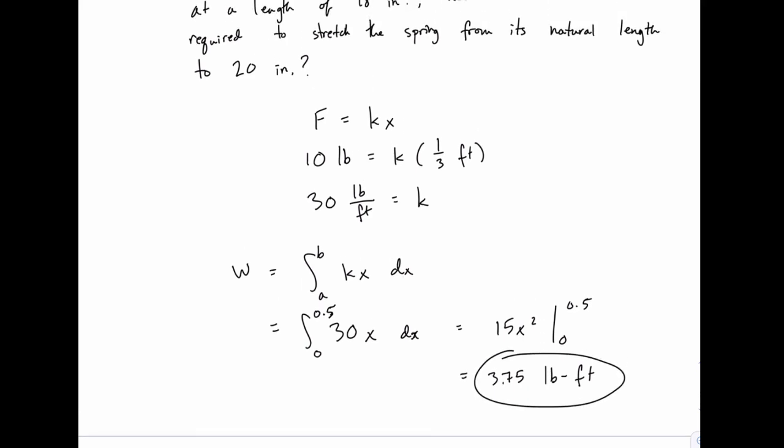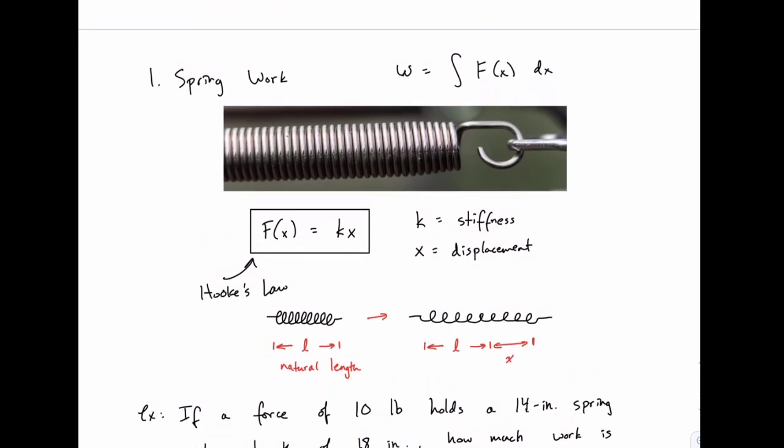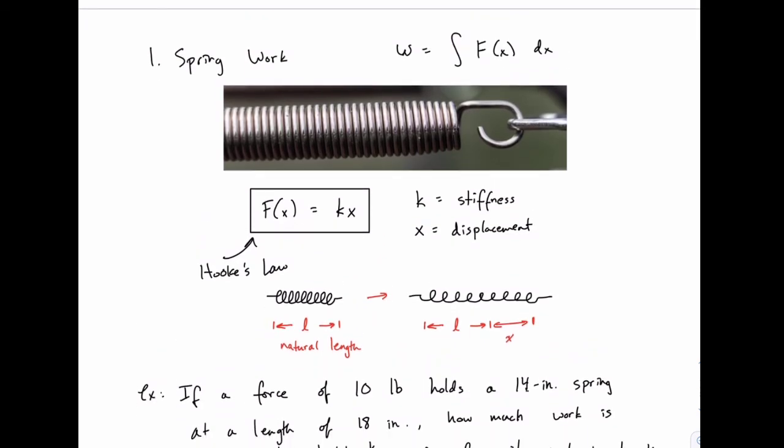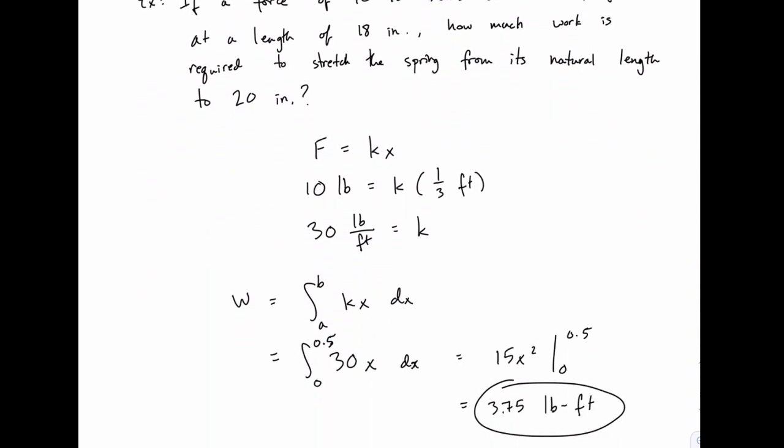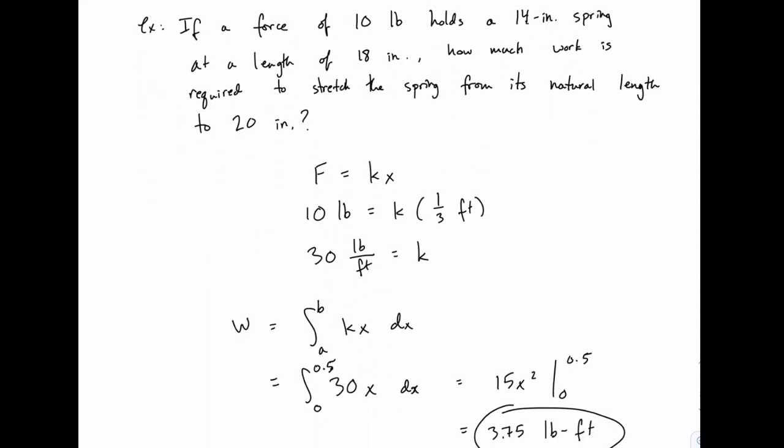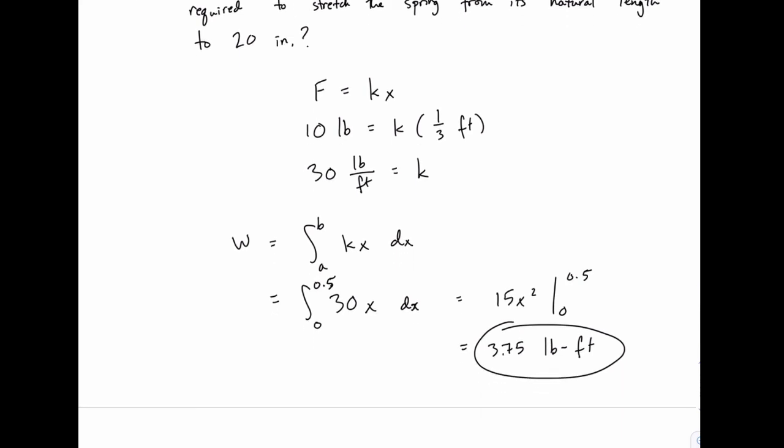So we're simply integrating to find work, integrating the force function, and the force function is given to us as k times x. We needed to first find the stiffness k using that statement about the force required to hold it at a certain point. And then once we knew k, we could calculate the integral to find the work necessary to stretch it from its natural length to 20 inches.